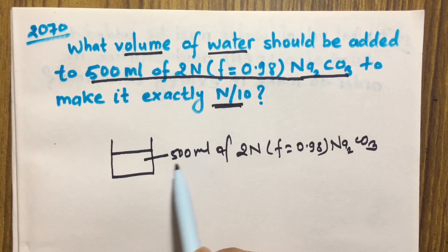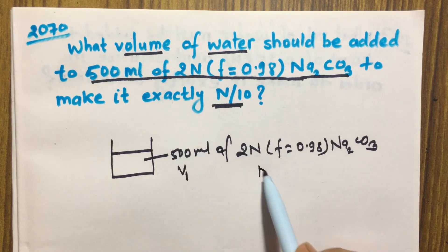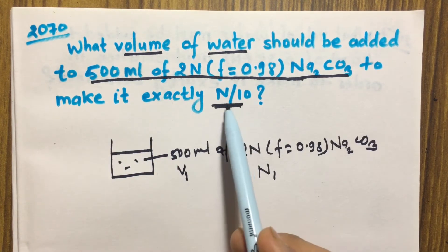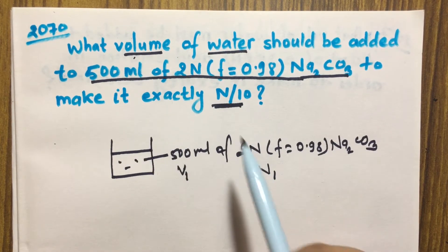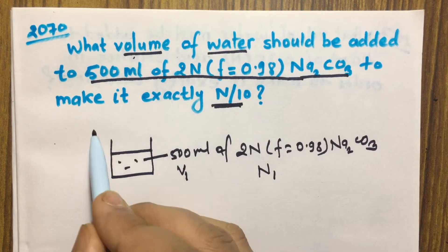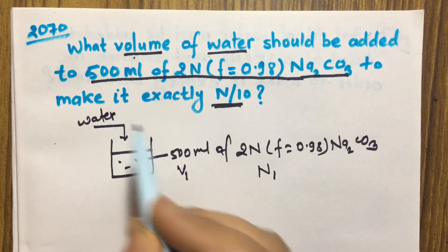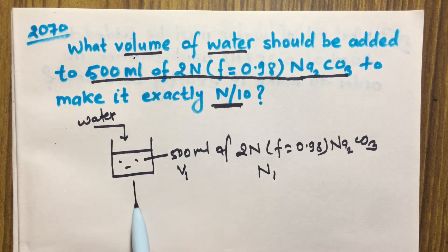We can suppose this 500 ml as V₁ and this one as N₁. To make this solution 0.1N, what volume of water can be added?